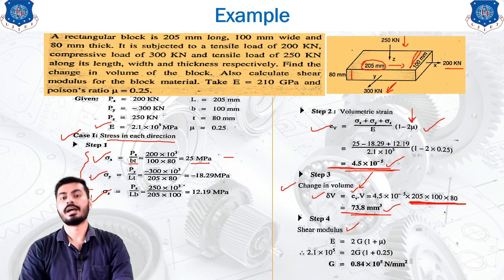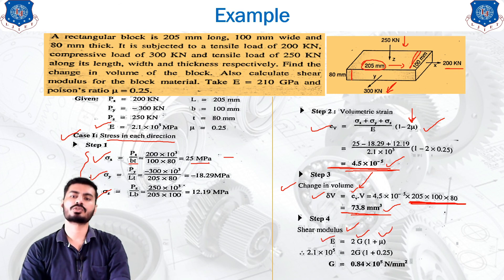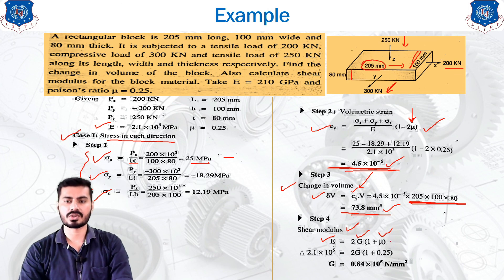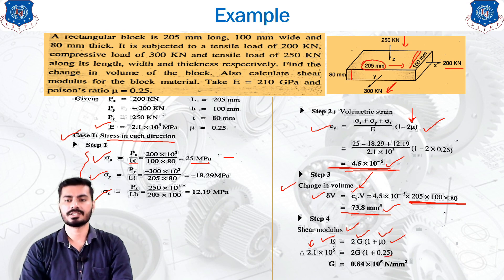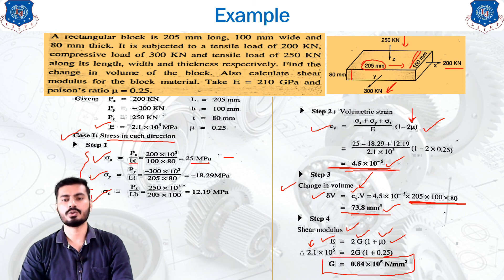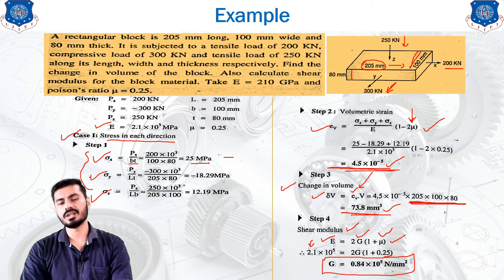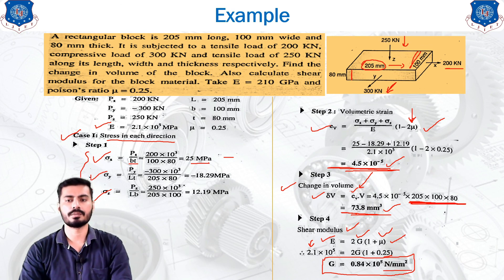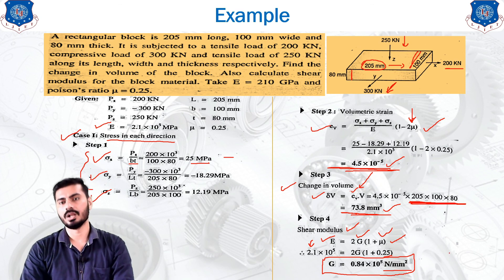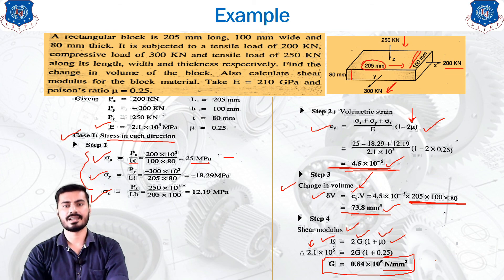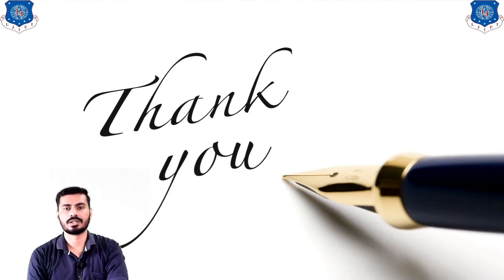The last step is to find the shear modulus G using the relation E = 2G(1 + mu). Entering the given values of E and mu, the only unknown is G. Solving gives the shear modulus G in N/mm² (MPa). This concludes the example and the lecture. In the next lecture we will see the concepts of center of gravity, moment of inertia, and centroid. Thank you.